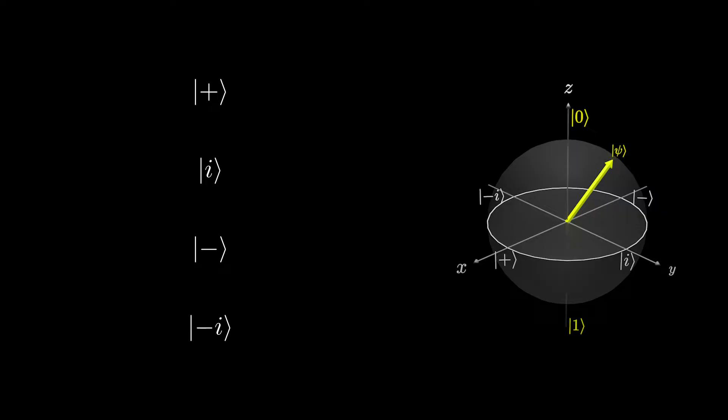Now that we know about phase, we can define these states. All they are are shorthand for commonly used states. Since they all lie on the equator of the Blocksphere, they all have an even chance of being measured as zero or one, but each one contains a different relative phase.